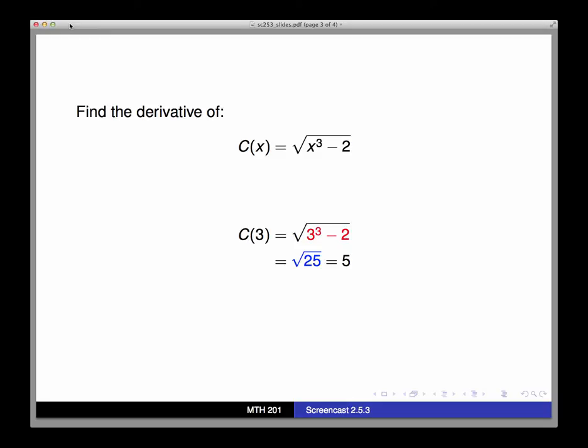This tells me that the, quote unquote, inside function, which I'm calling g(x) in the definition of the chain rule, that's the first link in the chain, is the function x cubed minus 2. And the outside function, or the second and final link in the chain, is square root of x.